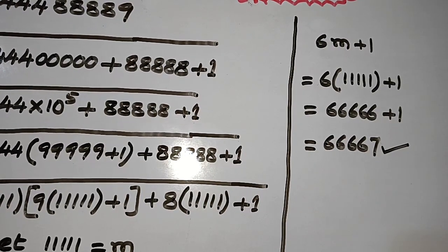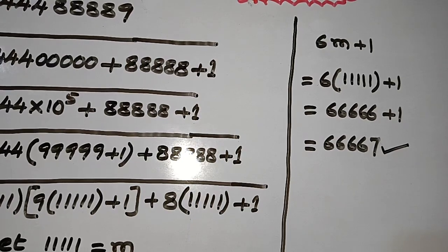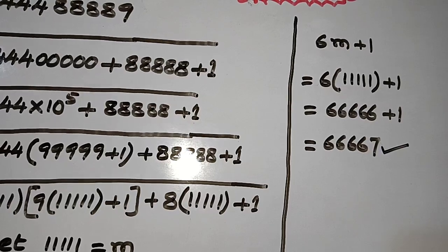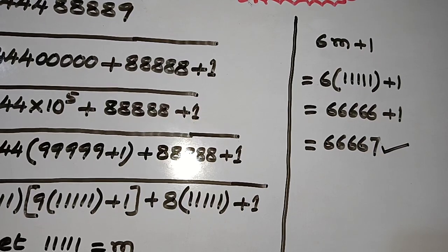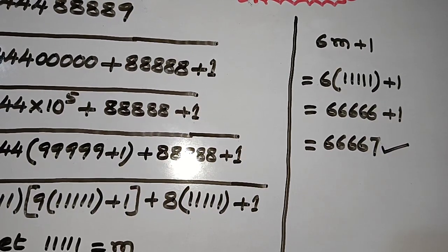Now substituting the value of m, which is 1,1,1,1,1,1: 6 times 111111 is 666666, and adding 1 gives 666667. So 666667 is the square root of the given number in which the first five digits are 4s, the next four digits are 8s, and the last digit is 9. If you like this tricky problem, please subscribe to my channel. Thank you for watching.